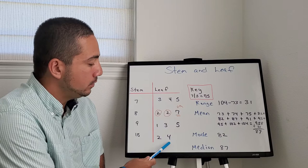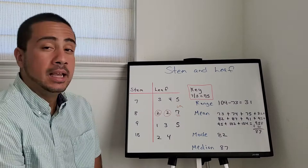What are we going to do first? We're going to do the range. Range, biggest value, 104. Smallest value, 73. We subtract, 31.